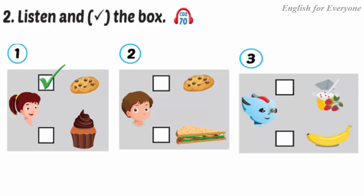Two: Mom, can I eat a sandwich? Sam, there's a cupcake in the kitchen for you. Great. What? Where's the cupcake?